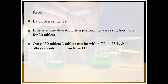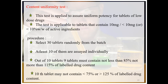If there is any deviation, perform the assay individually for 20 more tablets out of the remaining 30. In that case, up to 3 tablets can be within the limits of 75 to 125 percent, and all others should be within 85 to 115 percent.